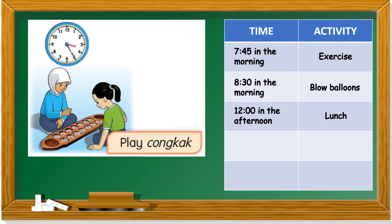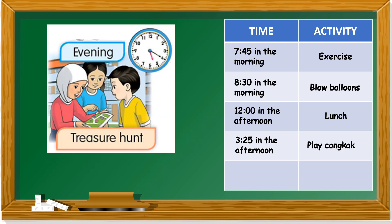The next activity — what time is it? The hour hand points between three and four, so it's three something — pukul tiga lebih. The minute hand points to five. Five times five is 25. So it's 3:25 in the afternoon. They are playing.